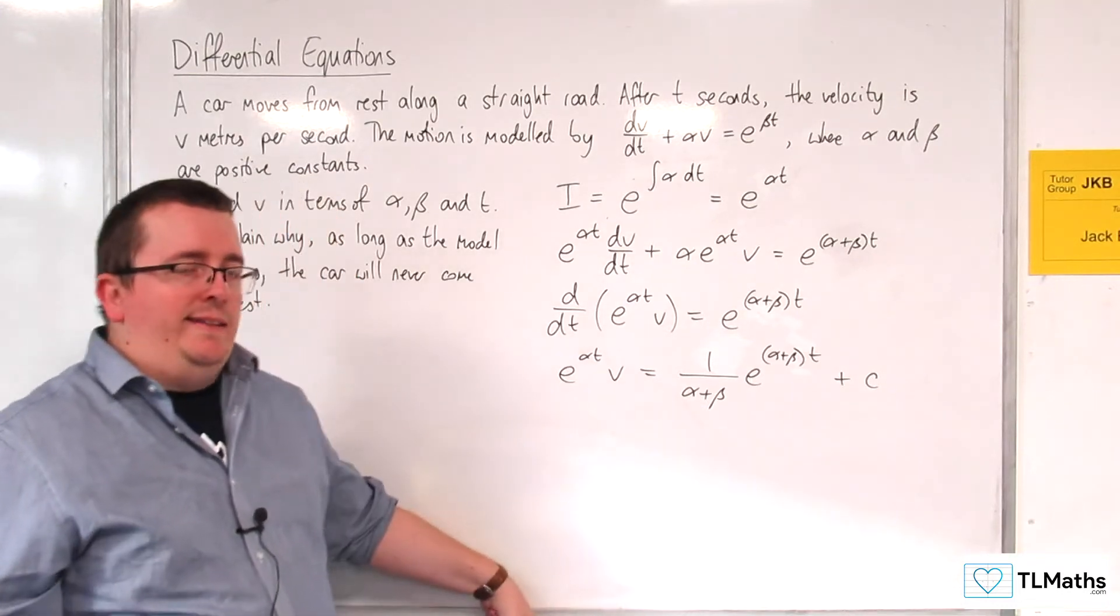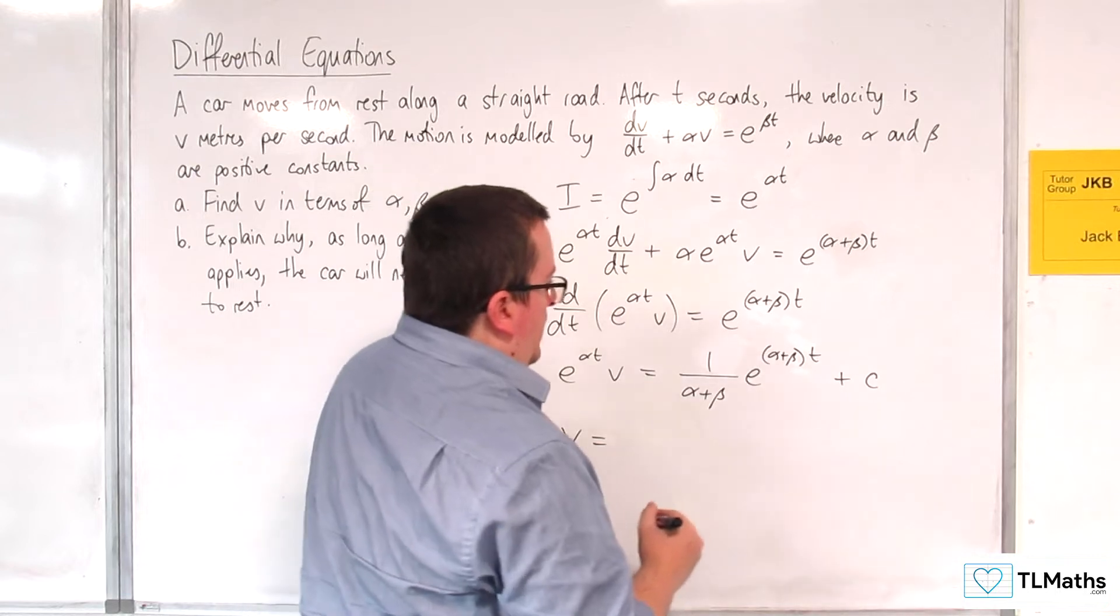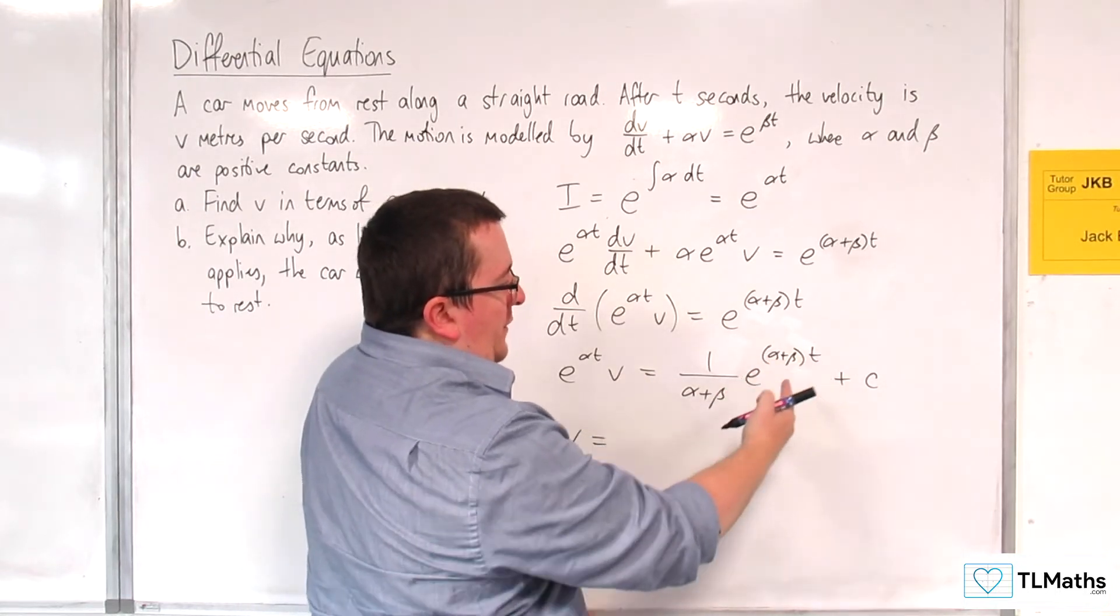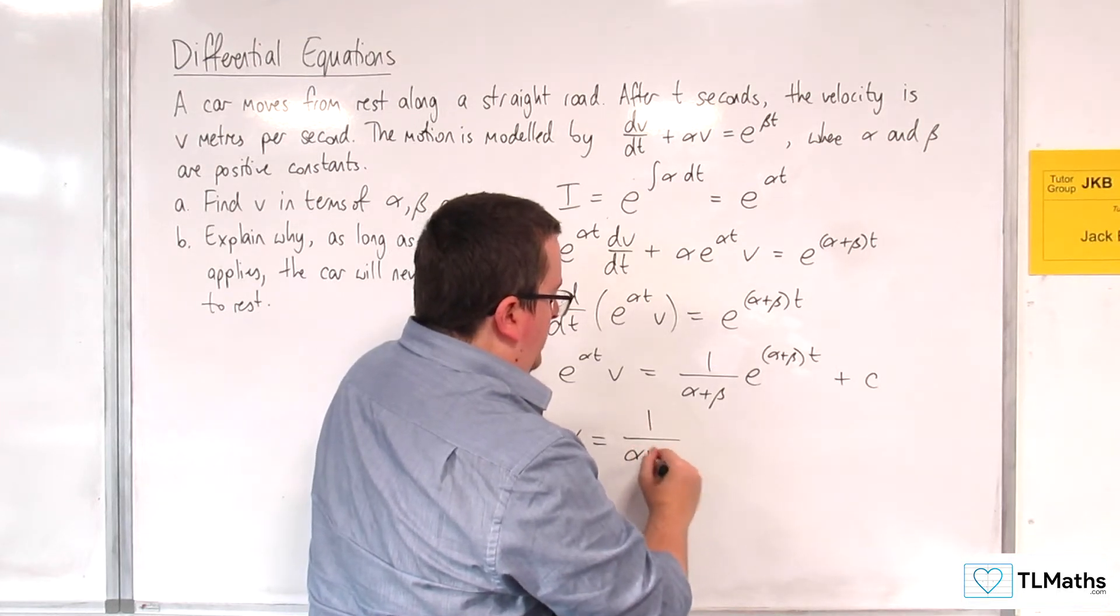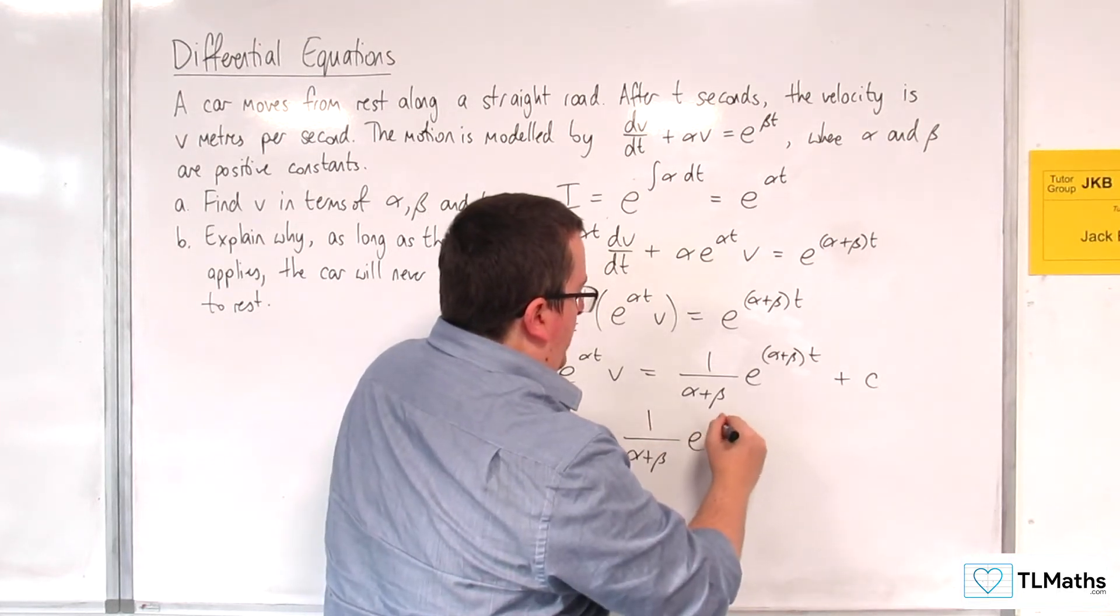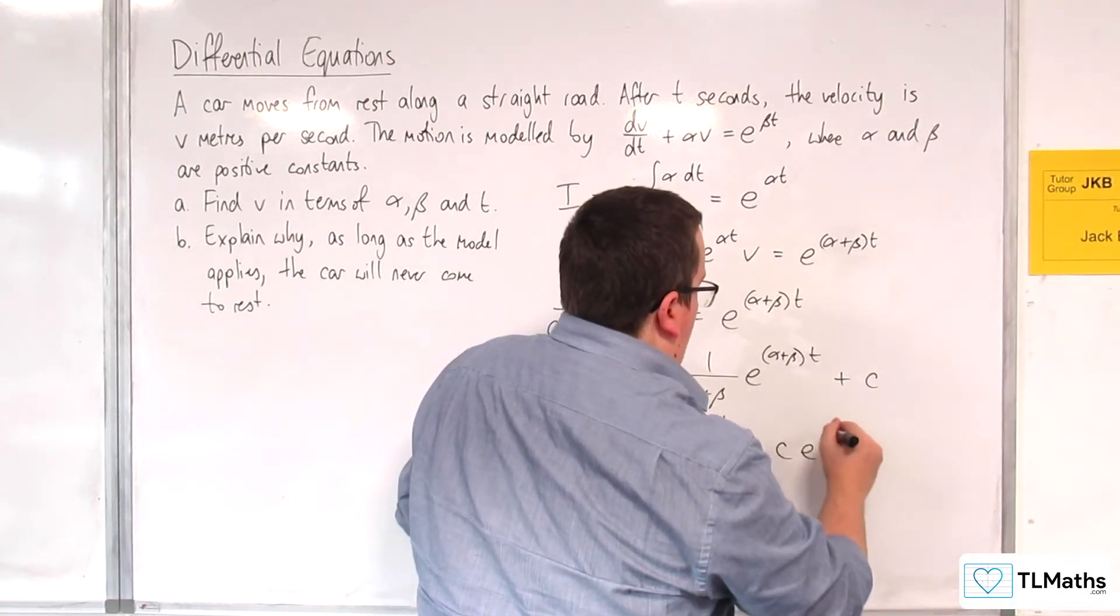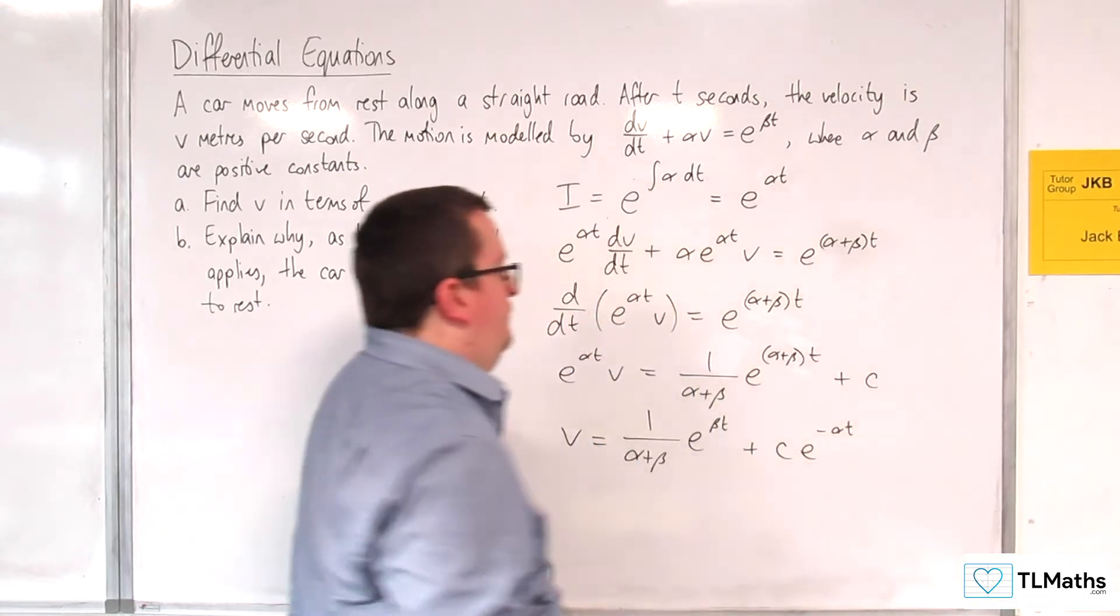Right, I'm going to divide through by e^(αt). So v equals - in dividing through by e^(αt), it's going to knock out the αt that's here in that power. So I'll have 1 over (α+β) times e^(βt) plus c times e^(-αt).